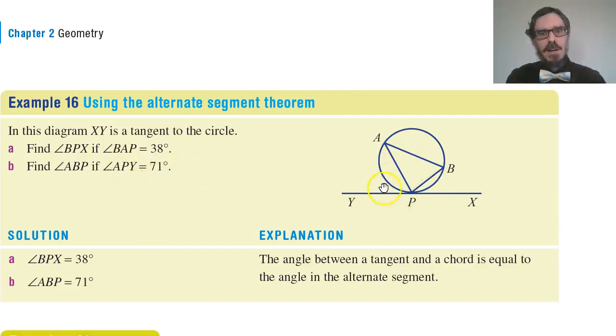In the same way, APY is 71 degrees. What's ABP? Well, ABP, this angle here, is the angle in the alternate segment from this chord. So, this angle must be the same as this one. They're both 71 degrees.